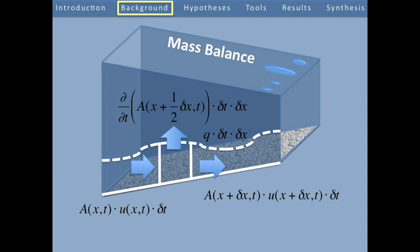Mass conservation can be stated in words as follows: the mass going into a volume element minus the mass going out of the volume element plus the change in mass stored in the element plus the change in mass added by a source is equal to the total change in mass in the element. Now mass conservation and volume conservation are identical in the case where you have an incompressible fluid like water in this case. So for the remainder of this derivation, I'm going to refer to volume and not mass.